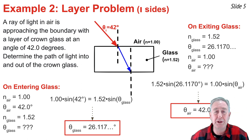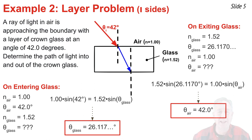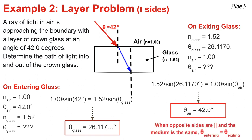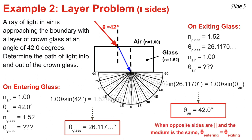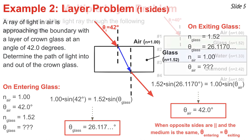I set up Snell's Law substituting the three known values — note that 1.52 and 26.117 go on the same side since they are measured values for the glass. After evaluating, dividing by 1.00, and taking the inverse sine, I get exactly 42.0 degrees — the same angle as the original incidence in air. This will always be the case with a layer having parallel sides and the same material on top and bottom: the entry angle equals the exit angle. I draw the refracted ray 42 degrees from the normal line and finish the problem.